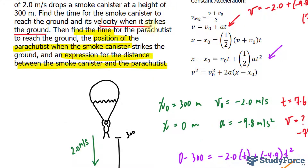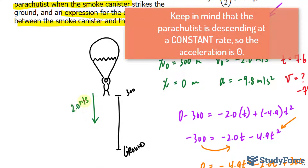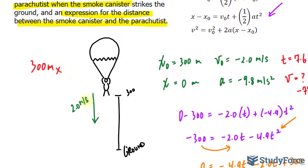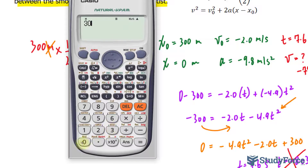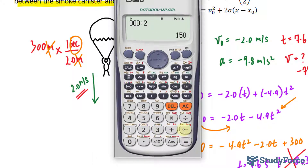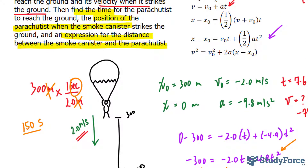Given what we just learned, we can find the time of the parachutist quite easily. Remember, the parachutist is 300 meters from the ground going at a constant speed. So if I write down 300 meters and multiply by 1 second per 2.0 meters — remember, speed is a rate and rates can be switched — multiplying these out, it takes this parachutist 150 seconds to reach the ground. Compare that to the canister, which is 7.6 seconds — a big difference.